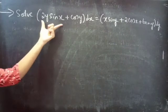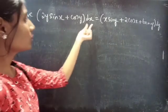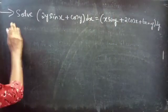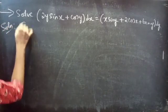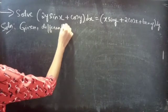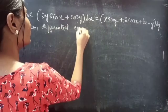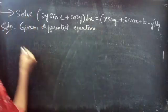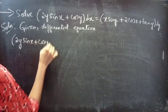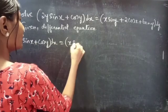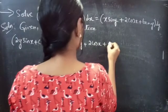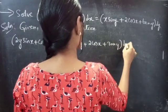Problem: Solve (2y sin x + cos y) dx equals (x sin y + 2 cos x + tan y) dy.